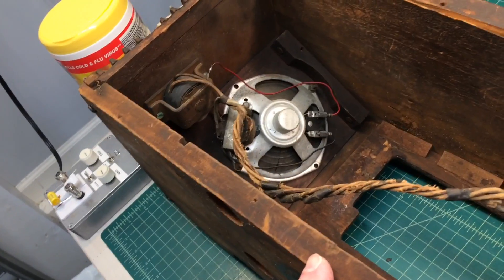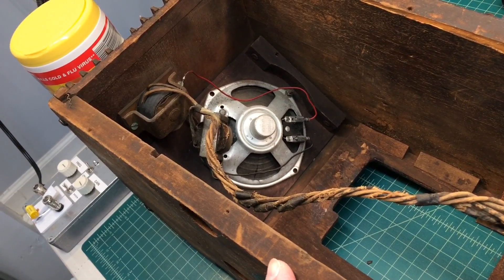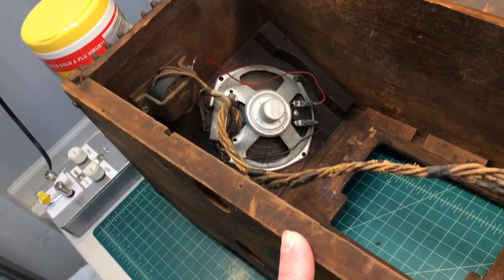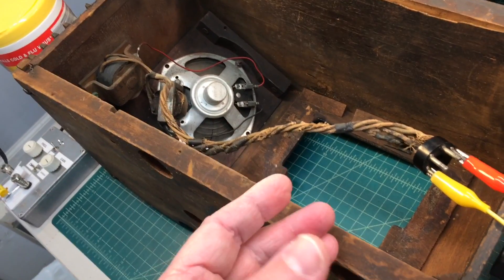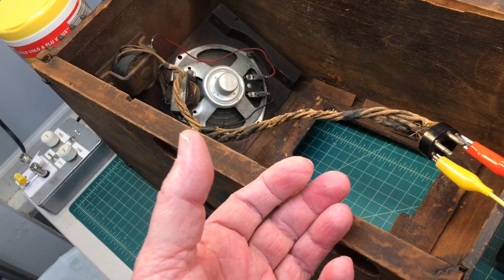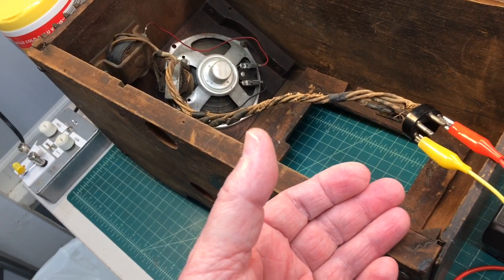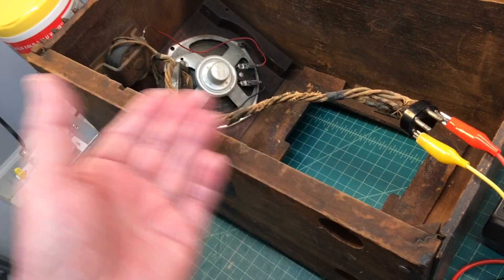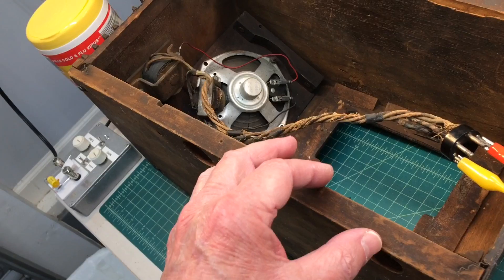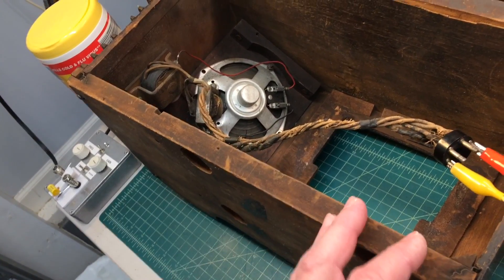You can see the speaker here that's been replaced at some point in time during its life. What I want to do is just revalidate my impedance measurements that I calculated before looking at turns ratio and estimating the speaker impedance of around four ohms or so.